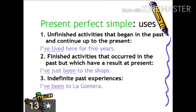Usage of present perfect tense: it is used to express an unfinished activity that began in the past and continues up to the present, for example, I have lived here for five years. Second, a finished activity that occurred in the past but has a result at present, for example, I have just been to the shop. Third, indefinite past experiences, for example, I have been to La Gomera.